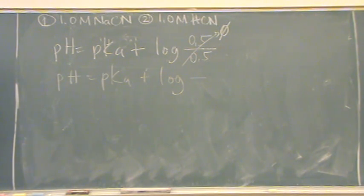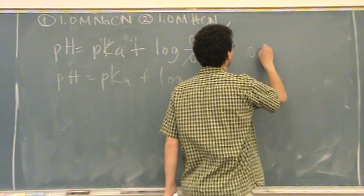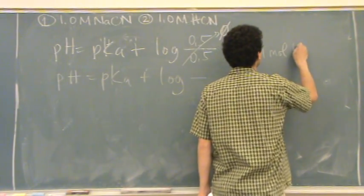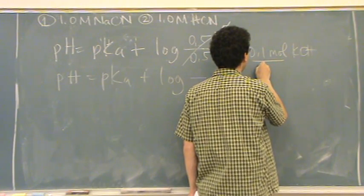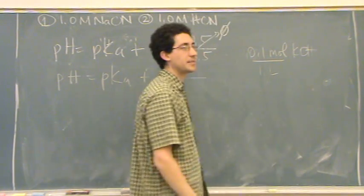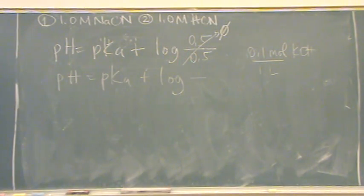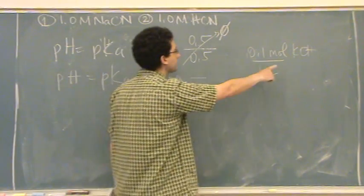The overall volume's one liter. So, 0.1 moles of KOH. If I wanted the molarity, I just divide by one liter, because that's the total volume. So, it's 0.1 molar.